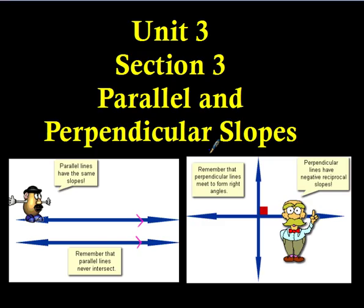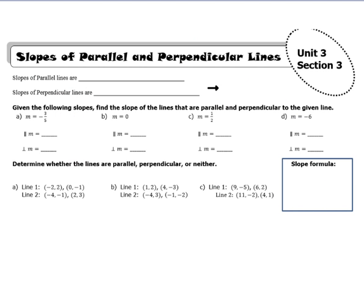Hey, it's Mr. Luneski with Unit 3, Section 3. We're going to be talking about parallel and perpendicular slopes. This should be a bit of a review as you talked about this in Algebra 1. So we have two types of lines: parallel lines and perpendicular lines.